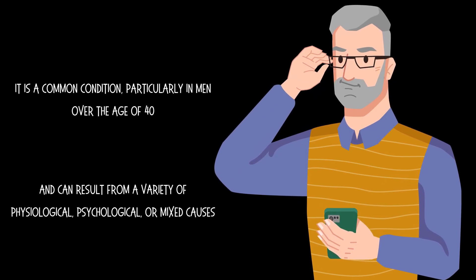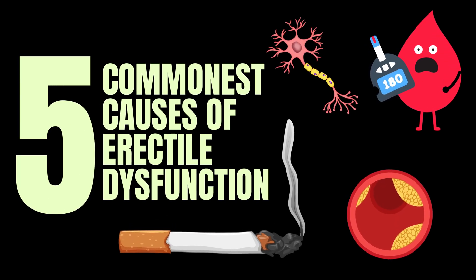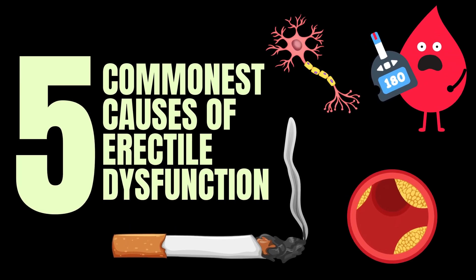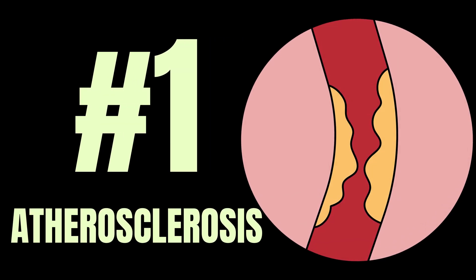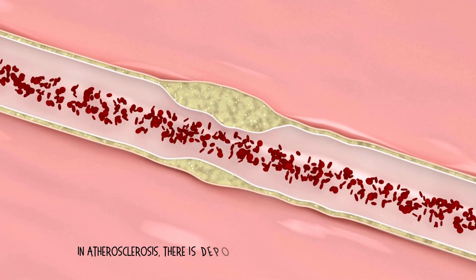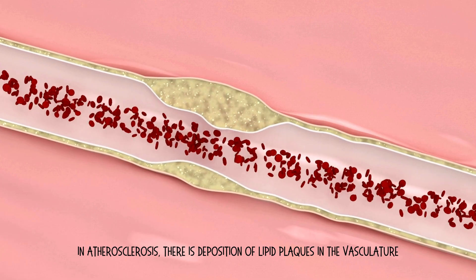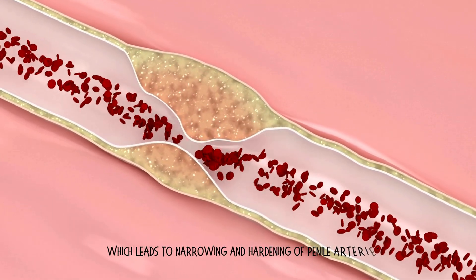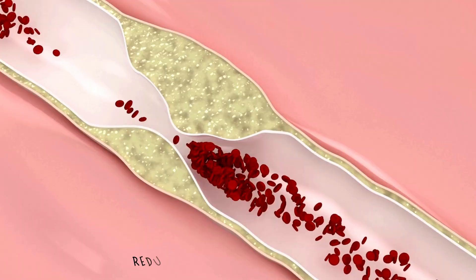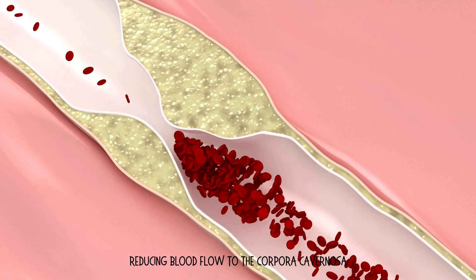In this video, I discuss the five commonest causes of erectile dysfunction along with their pathological basis. Number 1: Atherosclerosis. In atherosclerosis, there is deposition of lipid plaques in the vasculature, which leads to narrowing and hardening of penile arteries, reducing blood flow to the corpora cavernosa.